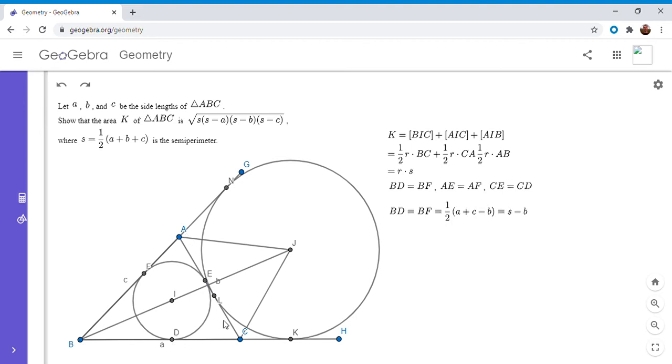So really, you just have BD is half of a plus c minus b. And if you work it out, that's actually just s minus b. So people familiar with Olympiad geometry will just recognize that BD has to equal BF has to equal s minus b. And we can similarly get expressions for the others. So AE and AF has to equal s minus a, and CE and CD has to equal s minus c.